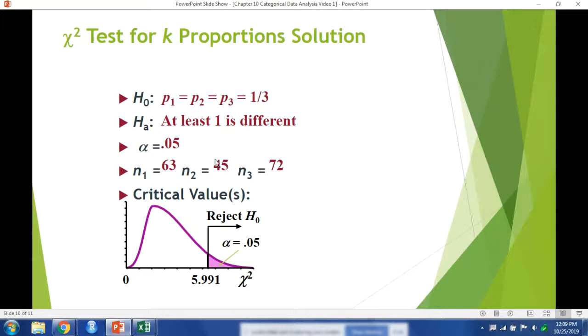Our null hypothesis is that they should have all been distributed equally. So the proportions are all equal to one third. That doesn't always have to be equal, or we're not always suggesting that the proportions have to be equal, but in this particular problem we are. The alternative hypothesis is that at least one of these proportions is incorrect. We are interested at the alpha equals 0.05 level, and we have observed values of n1 is 63, n2 is 45, and n3 is 72.